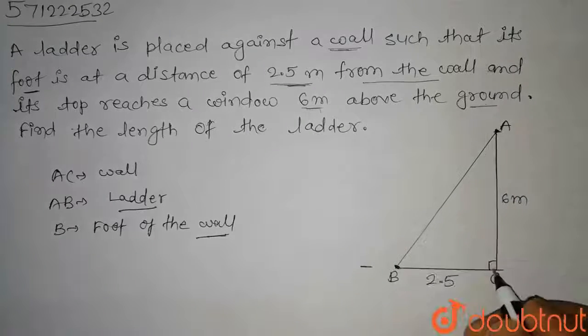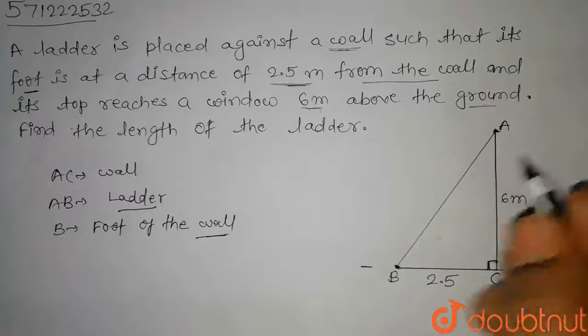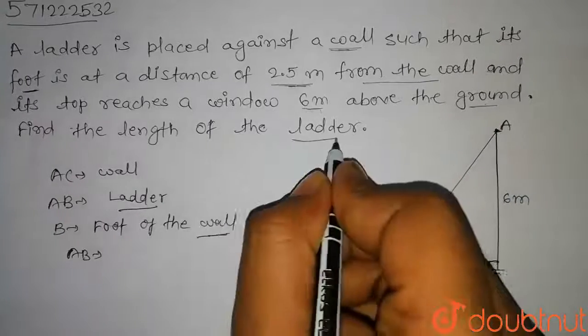So if you see this, this is a right angle triangle, and in this triangle we have to find the length AB, which is the length of the ladder.